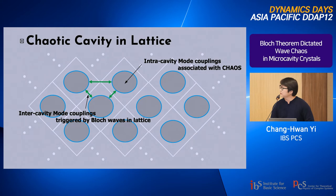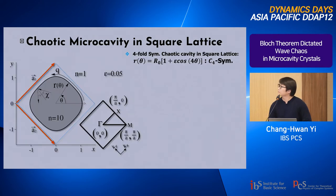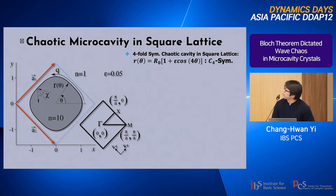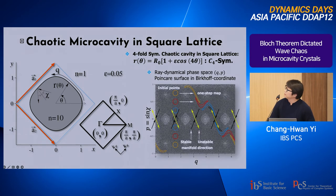Now let's turn our attention to chaotic cavities in lattice systems. Unlike single cavity systems, we now have to consider both intra-cavity mode couplings as well as inter-cavity mode couplings. The cavity boundary is again given by a C4 symmetric shape, and these C4 symmetric cavities constitute the atomic sites in the lattice. This is a mixed system as explained before.